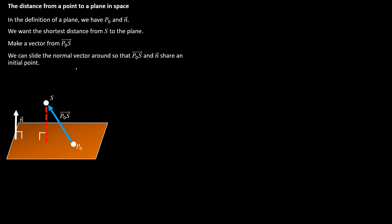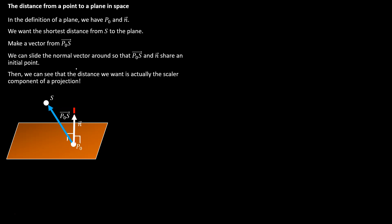We want to slide things around. Remember that we can move things in space without changing their size or direction — it's called translation. We're going to slide things over so that the normal vector is aligned with the initial point. From here, we can see that the distance we're looking for is really a projection of the blue vector onto the white vector. So to answer our question about distance, we're really just calculating a vector projection.